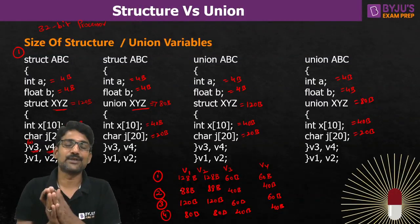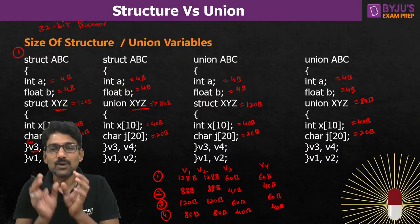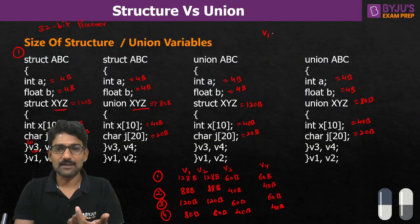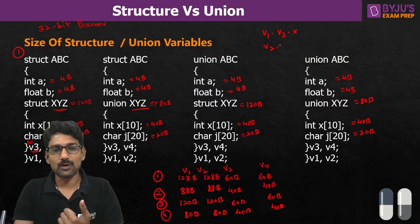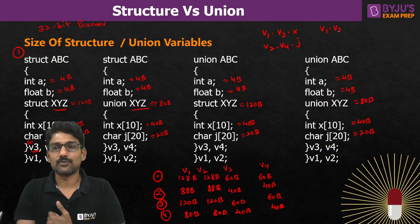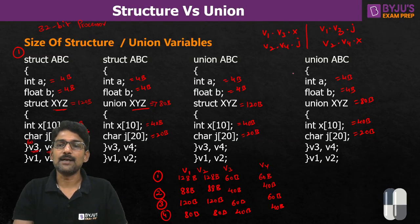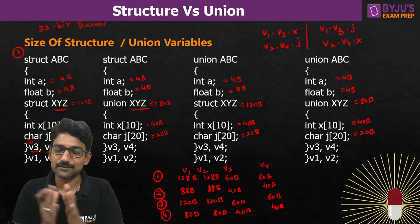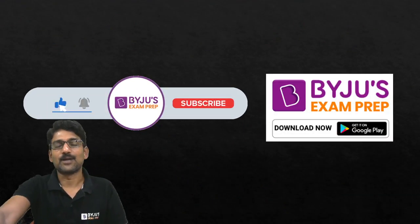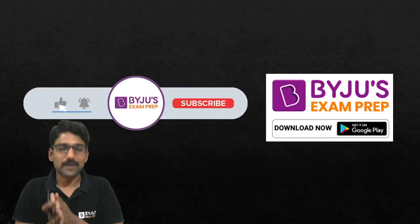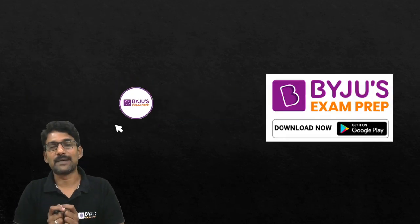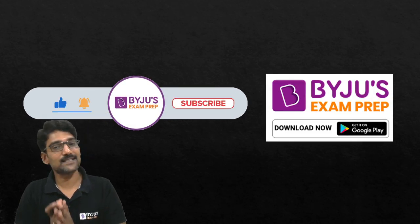Now you understand the difference between structure and union across all four nested combinations. To access inner members, for example: v1.v3.x, or v2.v4.j, or v1.v3.j, or v2.v4.x — that is how you access the nested members. I hope the concept of structure and union is clear. That's today's Concept Capsule. Keep watching — many more concept capsules are coming. Keep learning, keep growing. Don't forget to like, share, and subscribe to Byju's Exam Prep GATE channel. Thank you, see you in the next Concept Capsule!